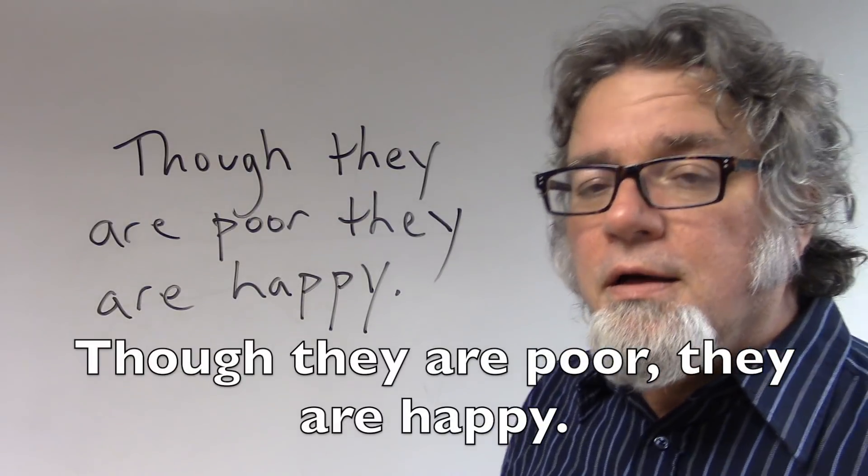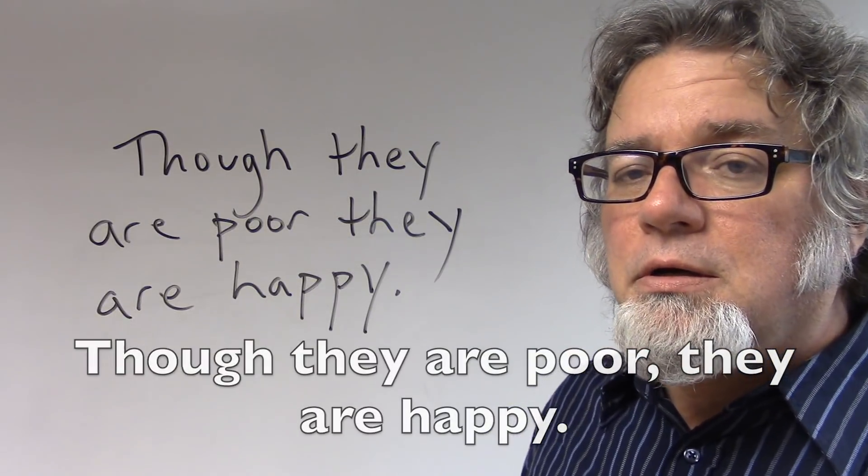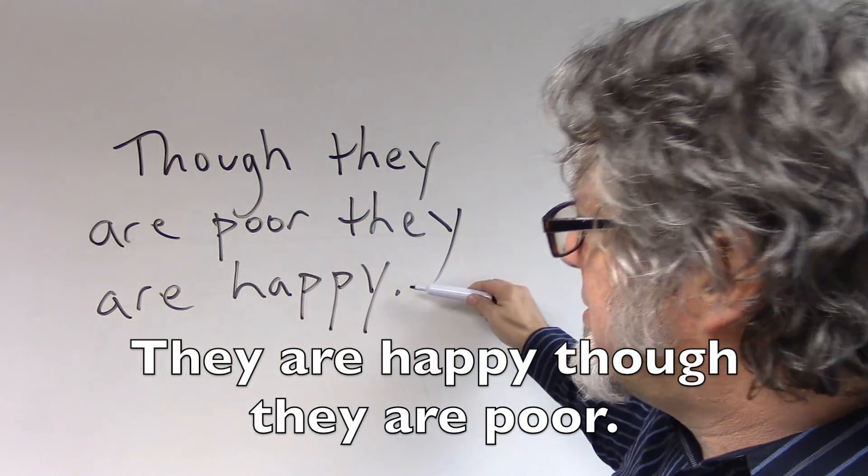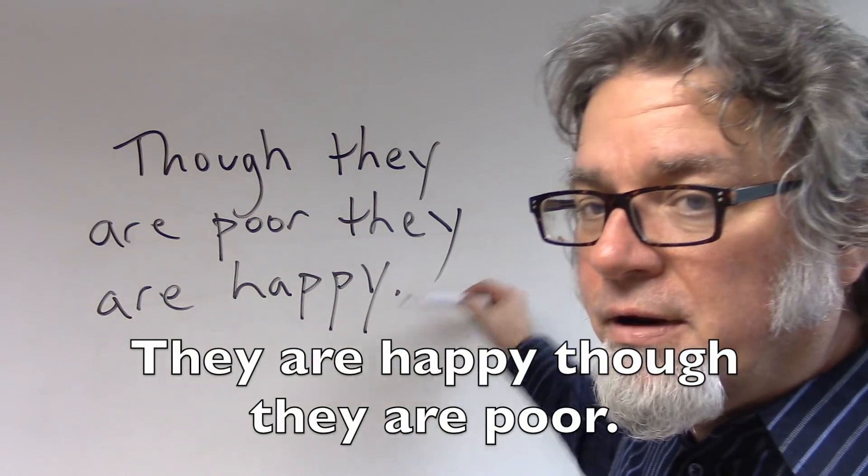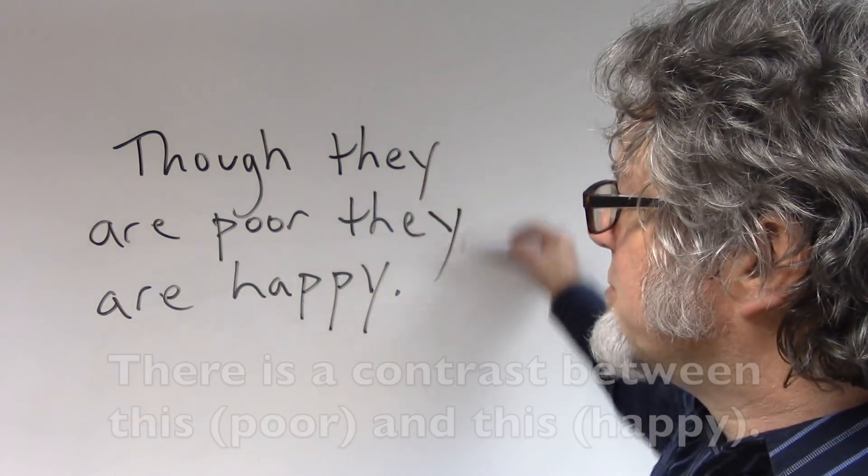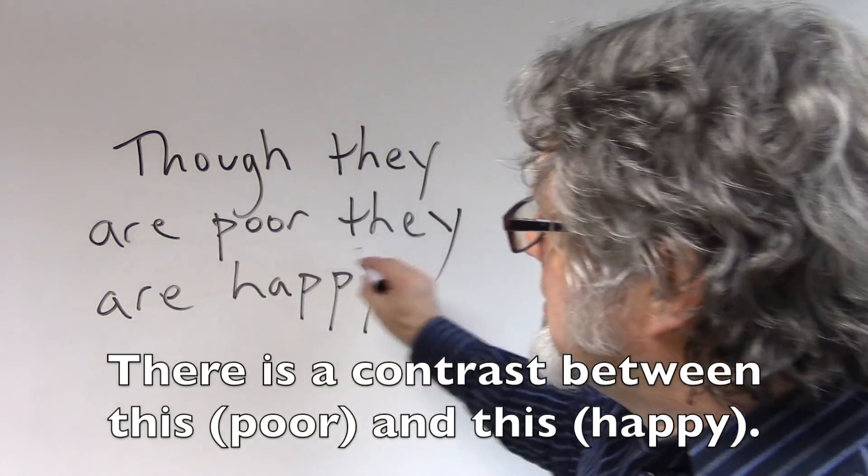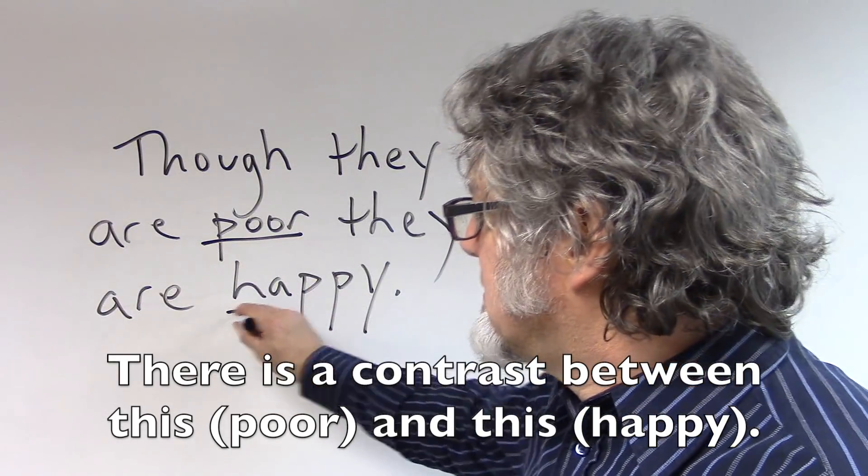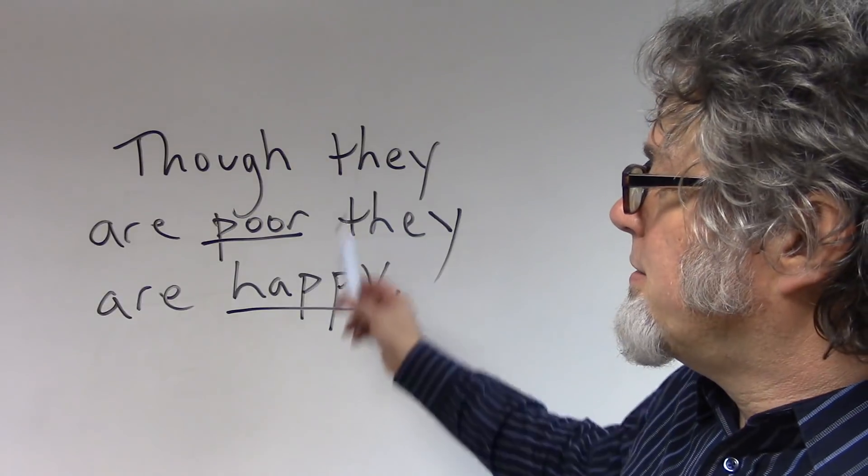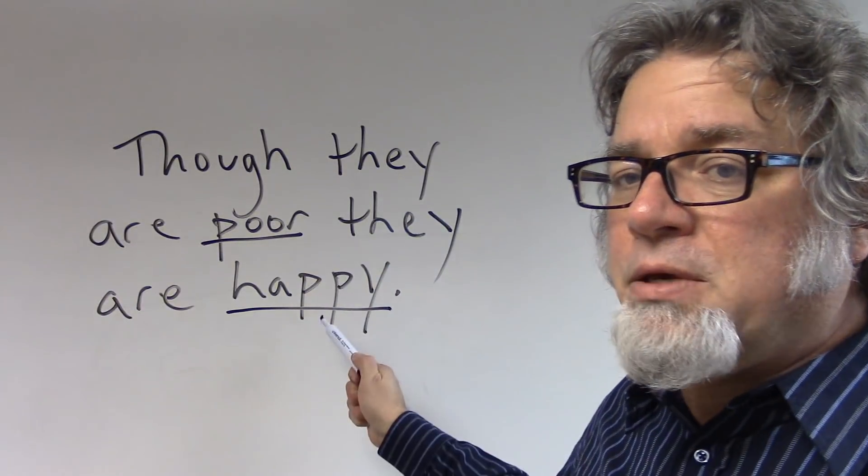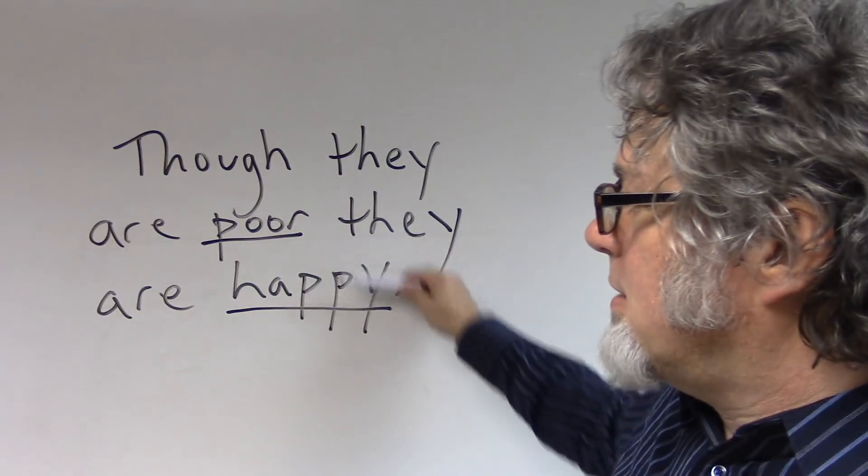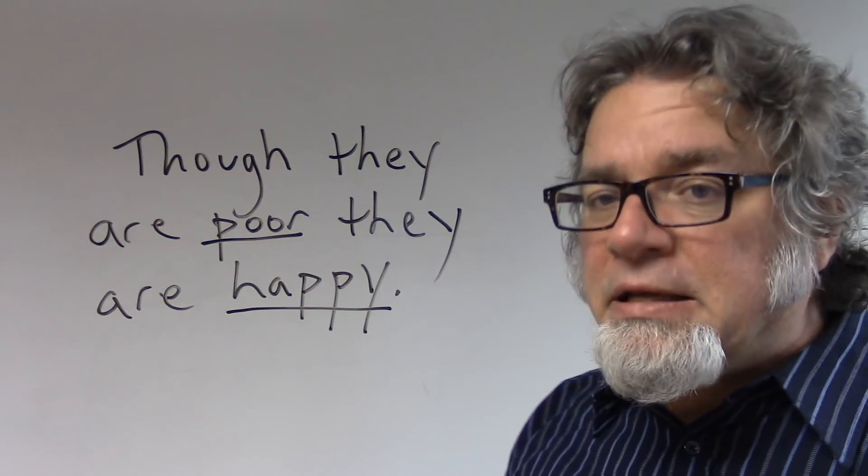Though they are poor, they are happy. Or you could start with, they are happy and then put this after, they are happy though they are poor. So there's a contrast between this and this. The expectation might be that if you're poor you're not happy. So, this is a good way of expressing that these two things can happen at the same time.